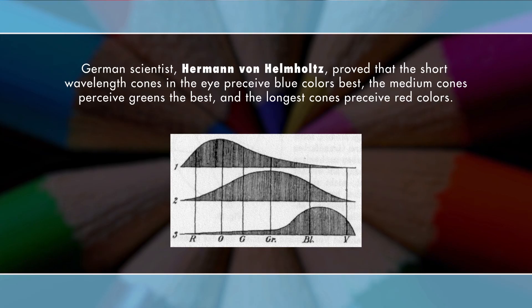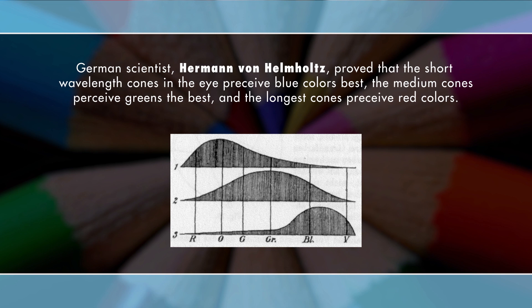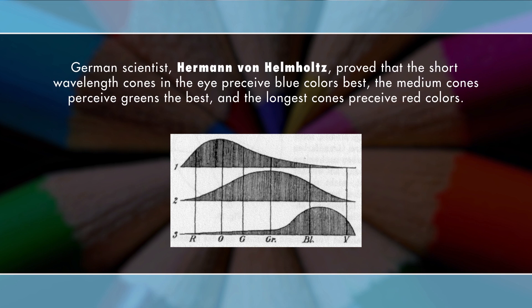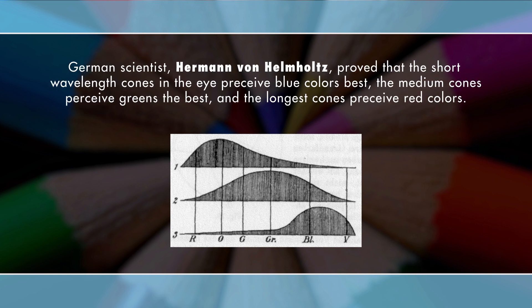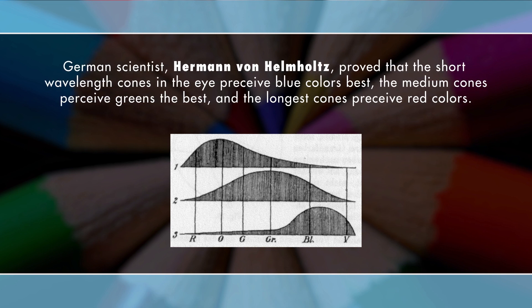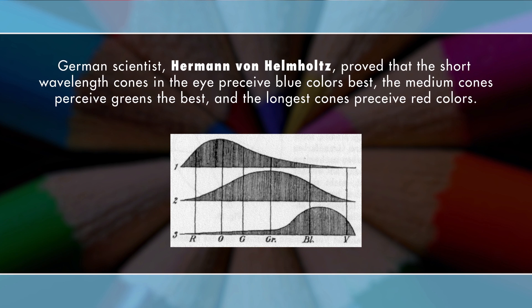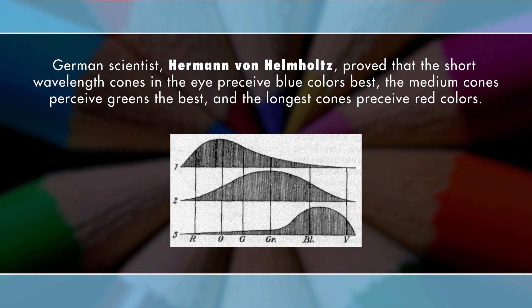Then, in the early 19th century, Thomas Young elaborated on this concept by proposing a theory that light was composed of waves and that each color had its own wavelength. However, it wasn't until the 1860s that German scientist Hermann von Helmholtz proved that the short wavelength cones in the eye perceive blue colors best, the medium-length cones perceive greens the best, and the longest cones perceive red colors. This theory became known as the trichromatic theory of color vision.